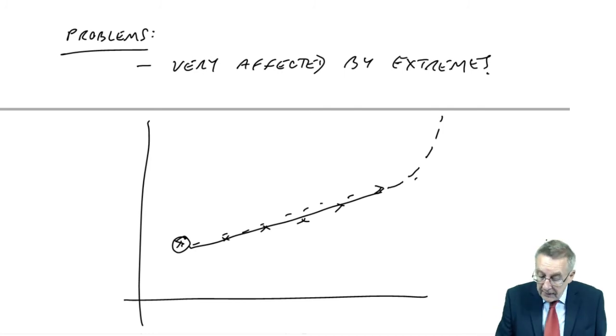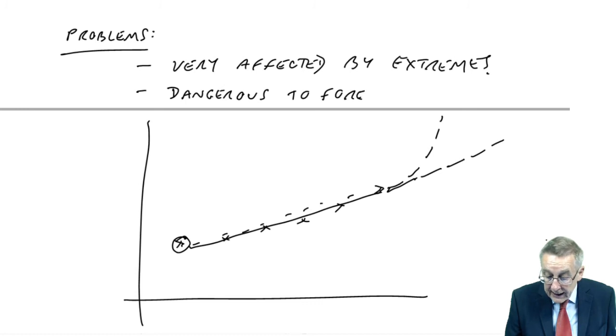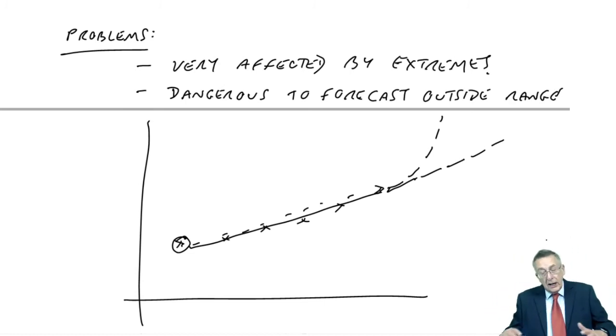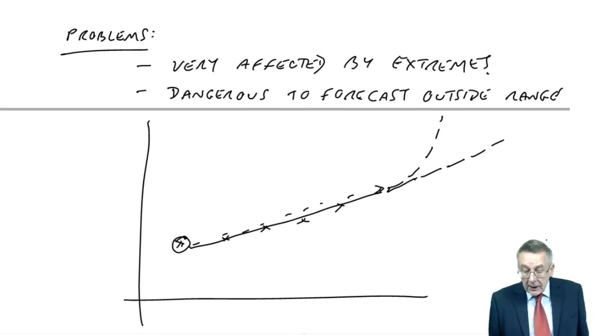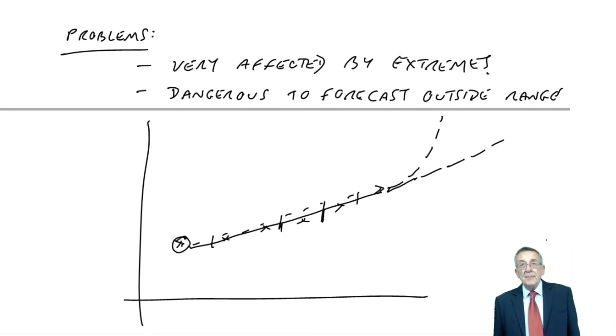Well, using that equation would be assuming it carried on in a straight line. Well it might not, and so it's dangerous to forecast outside the range. If our values are more or less linear, then okay we can be reasonably confident if we're forecasting within the existing range, but if you are trying to forecast outside it there is that risk.